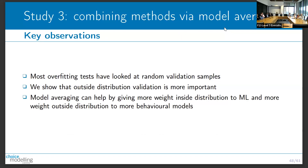Most overfitting tests look at random validation samples. Here we're seeing that the performance of models depends on where we're predicting - whether we go below or above the distribution. Model averaging allows us to use all models together and give different weights depending on where we're predicting.